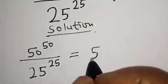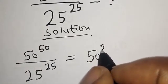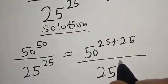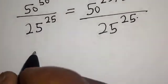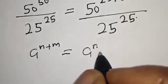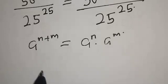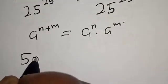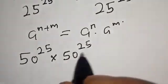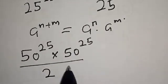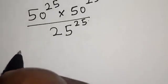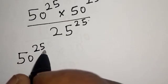This is equal to 50 raised to power 25 plus 25, over 25 raised to power 25. If you have a raised to power n plus m, this equals a raised to power n multiplied by a raised to power m. So we have 50 raised to power 25 multiplied by 50 raised to power 25, over 25 raised to power 25.